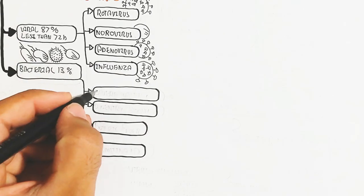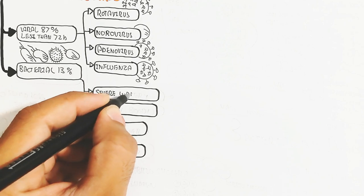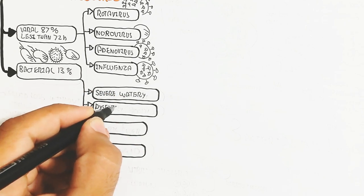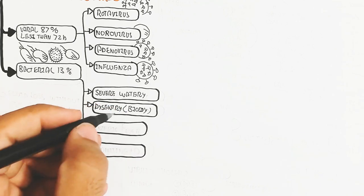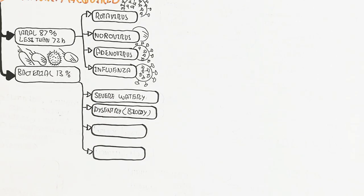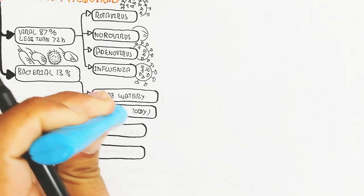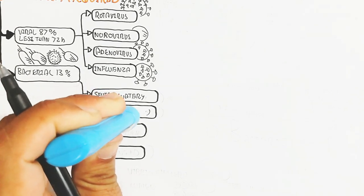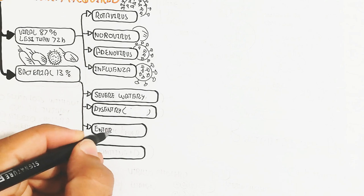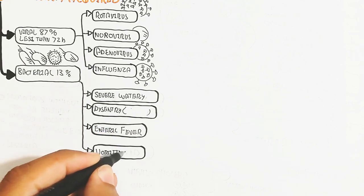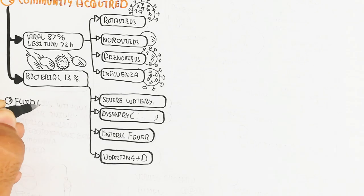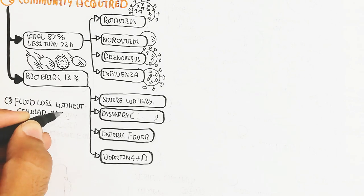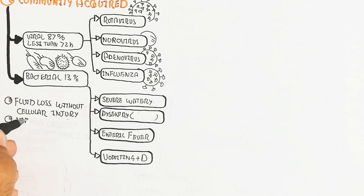The bacterial diarrhea is different. It can be severe watery dysentery and enteric fever, or vomiting plus diarrhea. The bacteria cause fluid loss without cellular injury due to bacterial toxin triggering. Vibrio cholera can include enterotoxigenic E. coli as well as Salmonella and Listeria.